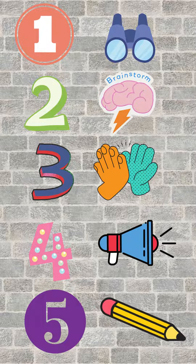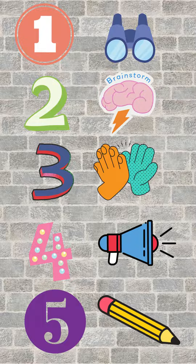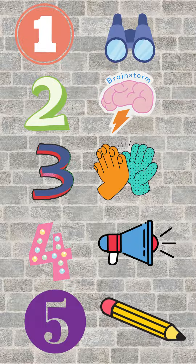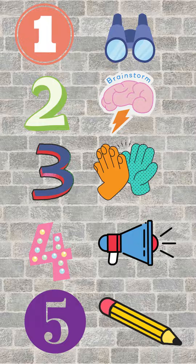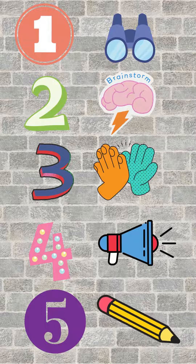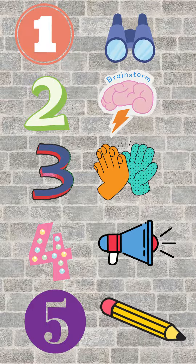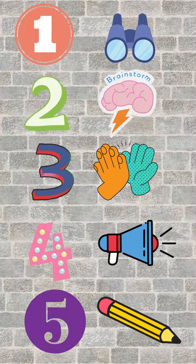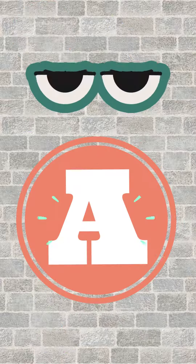Step five is to record. For young learners, it may be you recording for them on a chart tablet. If students are proficient writers, it could be them going back and drawing or writing in their interactive notebook or journal.